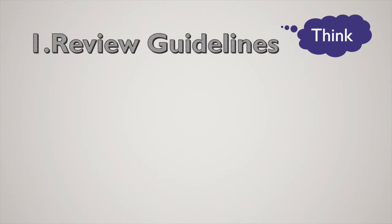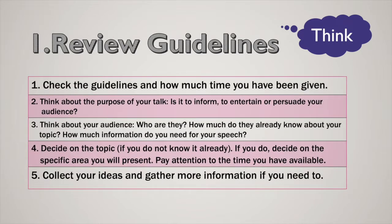The first step is to review guidelines. Number one, check the guidelines and how much time you have been given. Number two, think about the purpose of your talk — is it to inform, to entertain, or to persuade your audience? Number three, think about your audience: who are they, and how much do they already know about your topic? Number four, decide on the topic, and if you already have one, decide on the specific area you will present, paying attention to the time available. Number five, collect your ideas and gather more information if you need to.